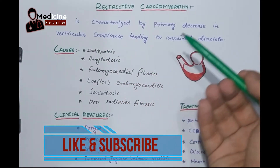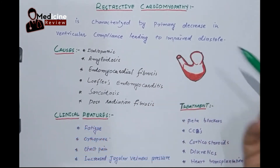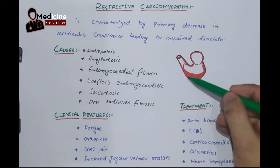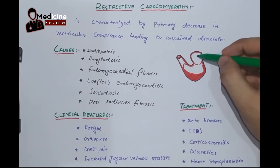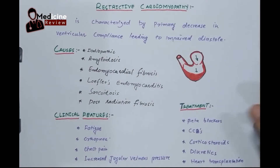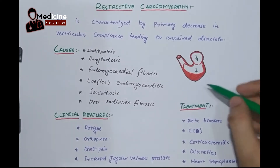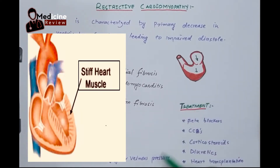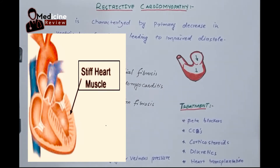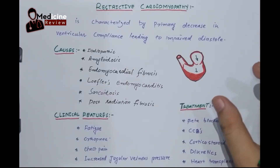Restrictive cardiomyopathy is basically characterized by a primary decrease in ventricular compliance leading to impaired diastole. For example, this is a left ventricle and this is the myocardium of the left ventricle. Whenever the atria contracts, blood pushes to the left ventricle, which relaxes and collects the blood, then contracts and gives the blood to the aorta, from where it gets to the whole body. But in restrictive cardiomyopathy, this myocardium becomes stiff because of different etiologies. The myocardium becomes rigid or fibrosed, so the left ventricle fails to relax properly, leading to diastolic dysfunction.